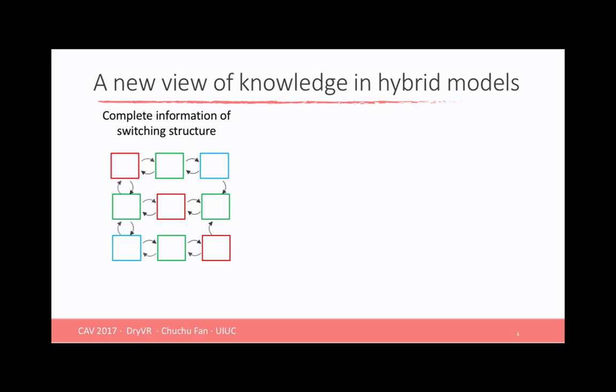So we are going to bring this new view of hybrid systems. First, we have the complete information of mode switches. For example, in the graph here, different colors mean different modes, and the switch information between the modes is clear to us. However, for each mode, we will only have executable access to the mode dynamics. That means the dynamic is actually a black box for us. We can only set the initial configuration and get executions that represent the state of the system.